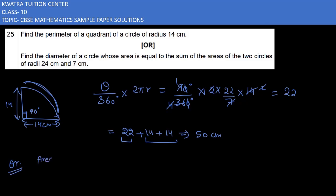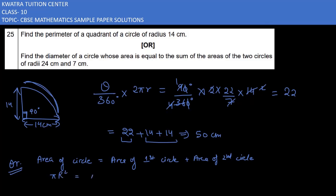The area of the new circle equals the area of the first circle plus the area of the second circle. That gives pi R squared equals pi r1 squared plus pi r2 squared. We take pi common from the right side, giving pi R squared equals pi times (r1 squared plus r2 squared). Cancelling pi from both sides, we get R squared equals r1 squared plus r2 squared.